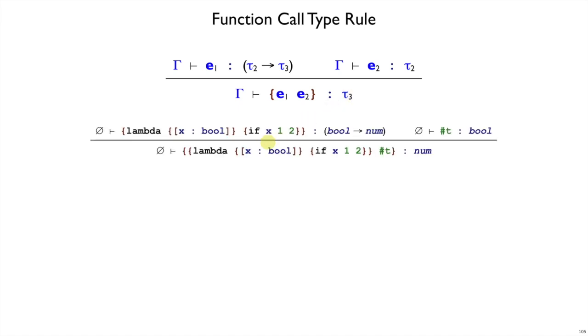So using that rule is how we get that lambda x if x 1 2 applied to true is of type number. Because we get an arrow type for the function position, we get a boolean for the argument position, bool matches up, and so we take this number down as the result of type check.